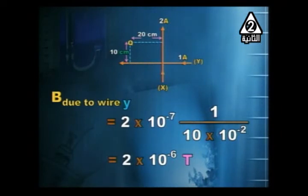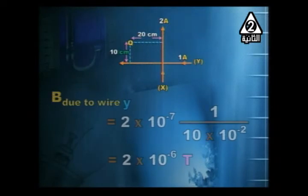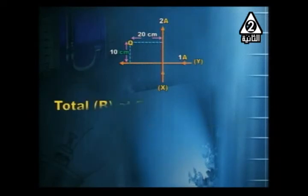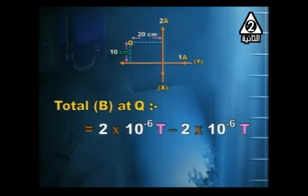Determining the directions of the two fields at point Q: they are in opposite directions and equal in magnitude, so they cancel out. Total magnetic flux = 2 × 10⁻⁶ − 2 × 10⁻⁶ = 0.